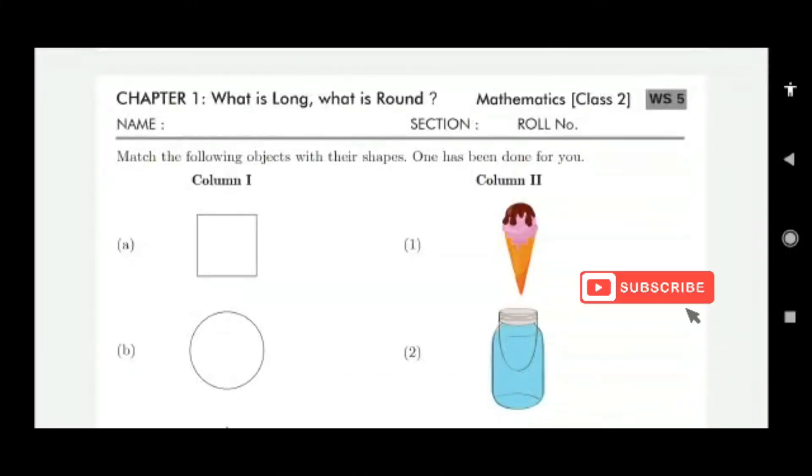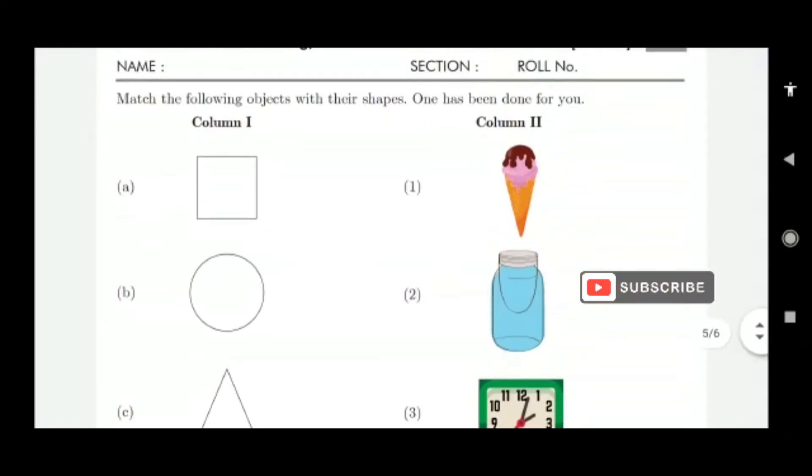Children, Worksheet 5 of Mathematics of your class 2. This also belongs to the first chapter, what is long and what is round? So here all fill in the blanks, writing own items, we have done.